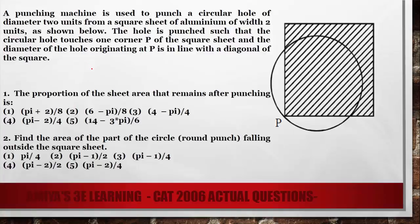The question is in front of you — please read it. According to the question, we have a square of length 2 units and a circle of diameter 2 units. This is nothing but a punching machine. The most important thing is that the diameter of the hole originating at P is in line with the diagonal of the square, and the center of this circle also lies on the diagonal.